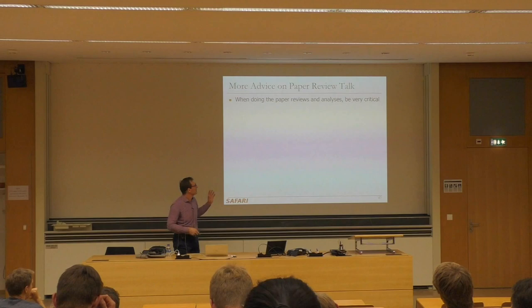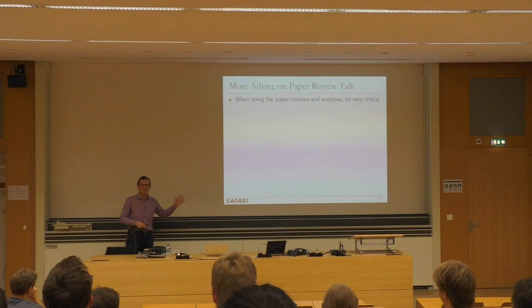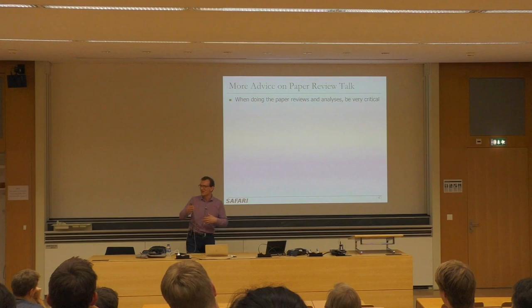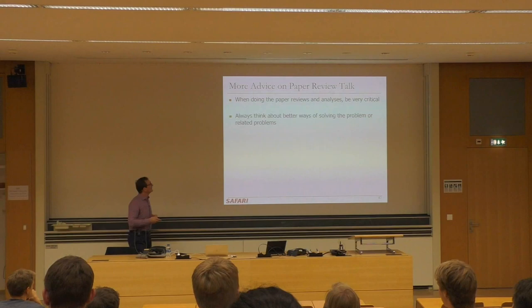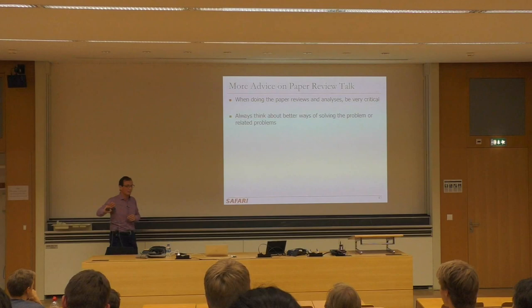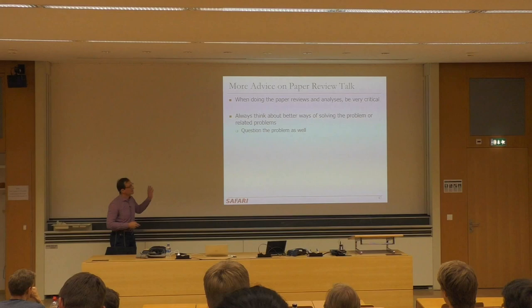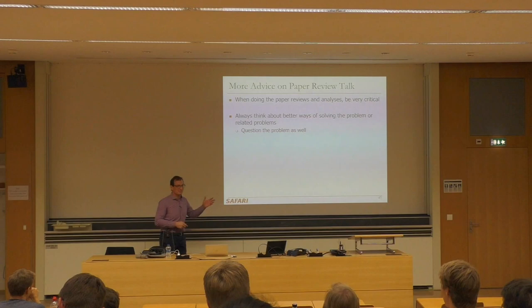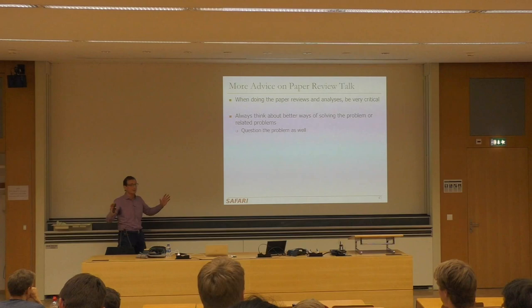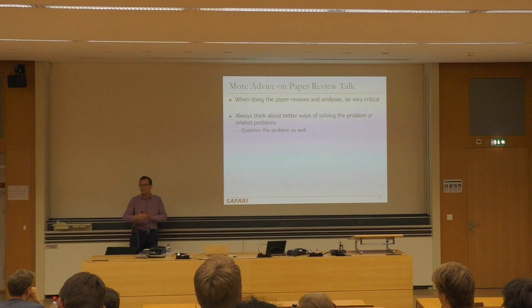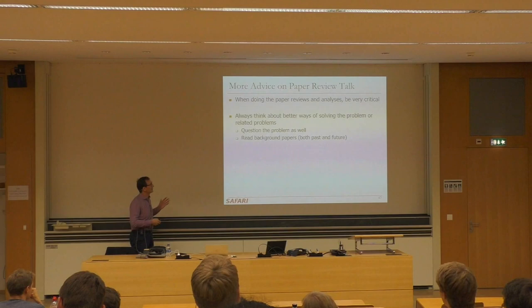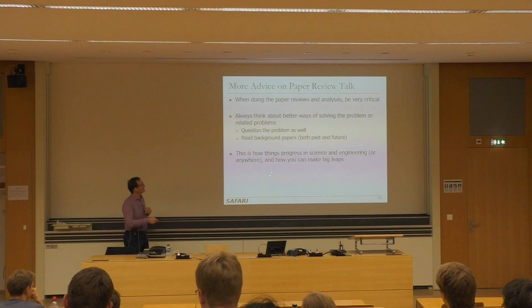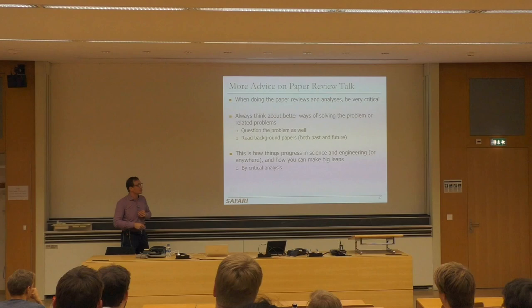Always think about better ways of solving the problem and related problems. Question the problem as well — sometimes the problem may not be that good, or the problem may be obsolete, or the paper solved it so well that no one else is doing anything in that area anymore. I would suggest reading background papers, both past and future, at least skimming over some of them. This is how things progress in science and engineering — how you can make big leaps by this critical analysis. You can apply this globally and locally, in a single paper and also across pieces of work.